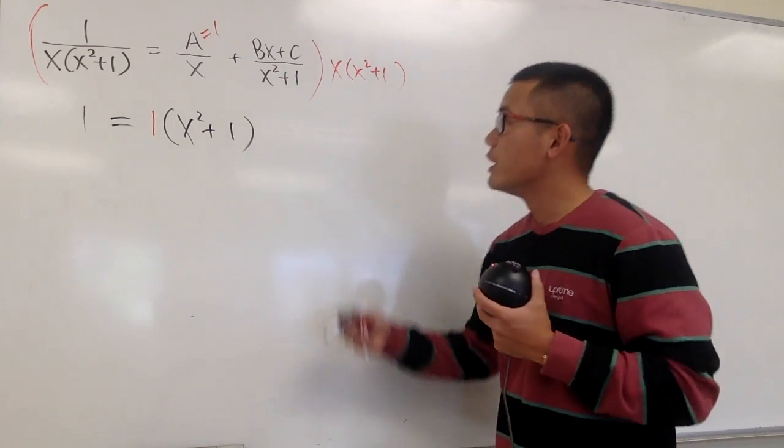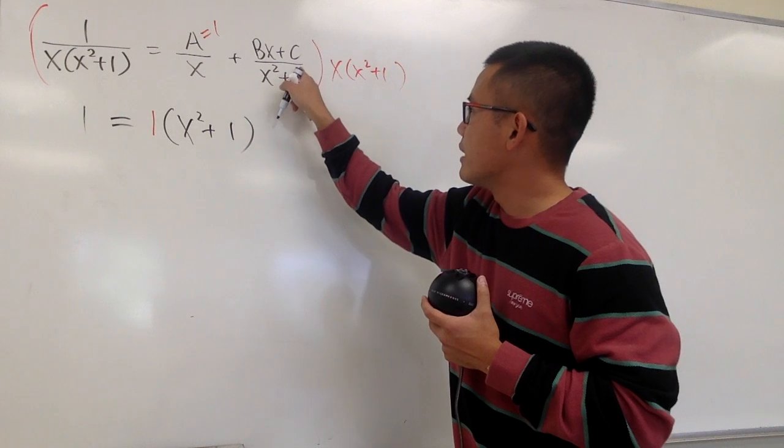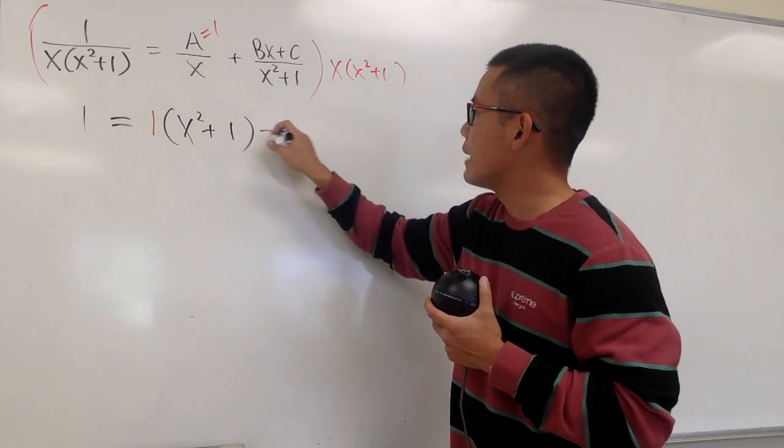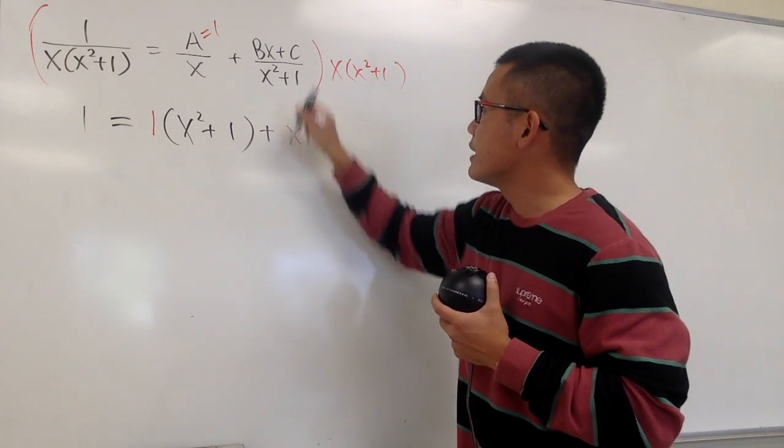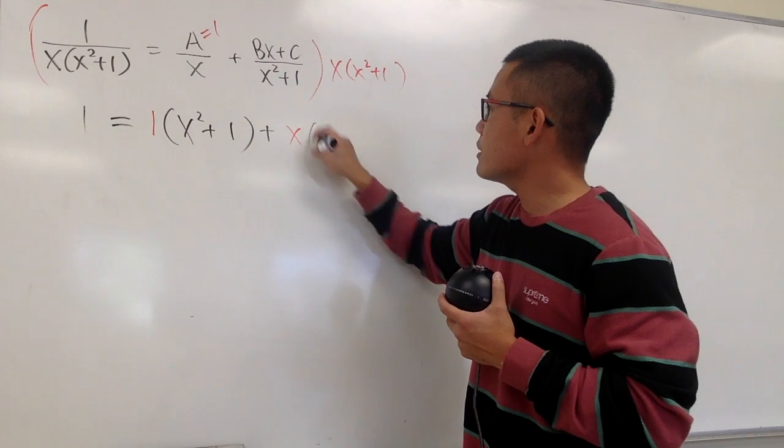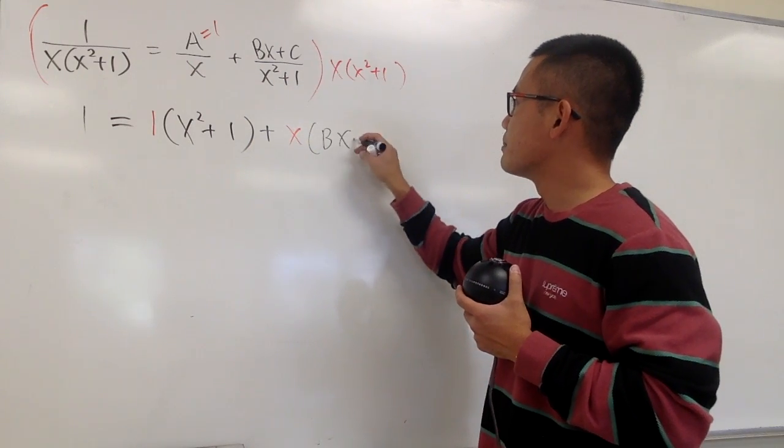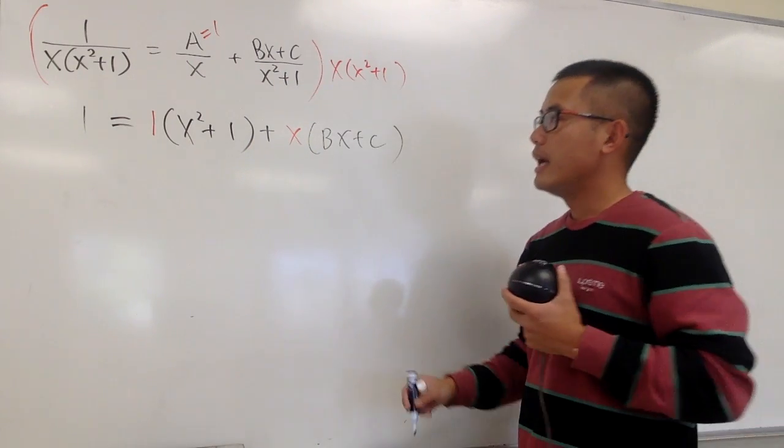And then next, we do this fraction times that, and x squared plus 1 will cancel, so we have plus, let's put on the x first, and let's put on that right here, we have the bx plus c.